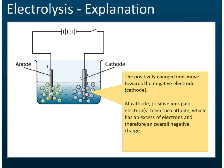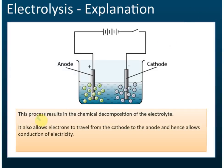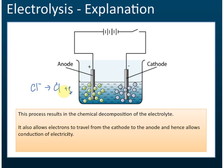So that's what happens during electrolysis. This process results in a chemical decomposition of the electrolyte. The negative ions lose electrons and become a new substance. For example, if this is chloride, the chloride after losing electrons will become chlorine — so chloride becomes chlorine.